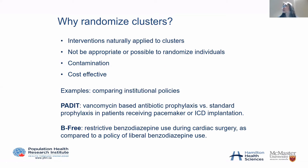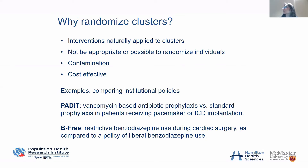Randomizing at the cluster level can also be more cost-effective. Instead of training a nurse on two different interventions, we can train nurses on a single intervention, avoiding contamination and reducing the cost of training on two different types of interventions.